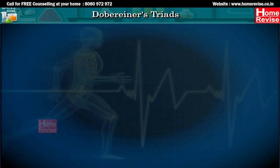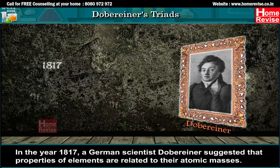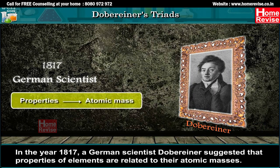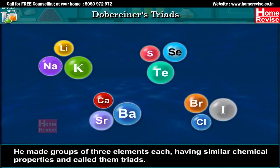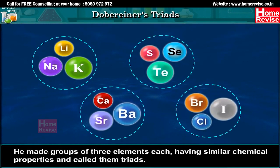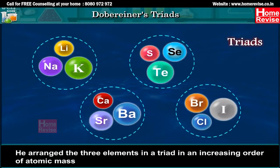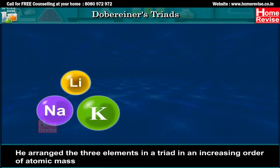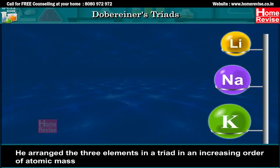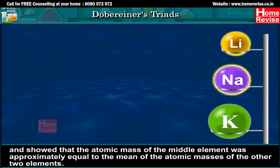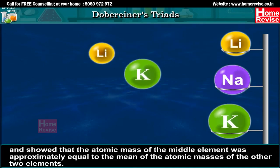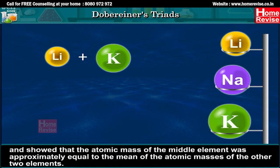Dobereiner's Triads. In the year 1817, a German scientist, Dobereiner, suggested that properties of elements are related to their atomic masses. He made groups of three elements each, having similar chemical properties, and called them triads. He arranged the three elements in a triad in an increasing order of atomic mass, and showed that the atomic mass of the middle element was approximately equal to the mean of the atomic masses of the other two elements.